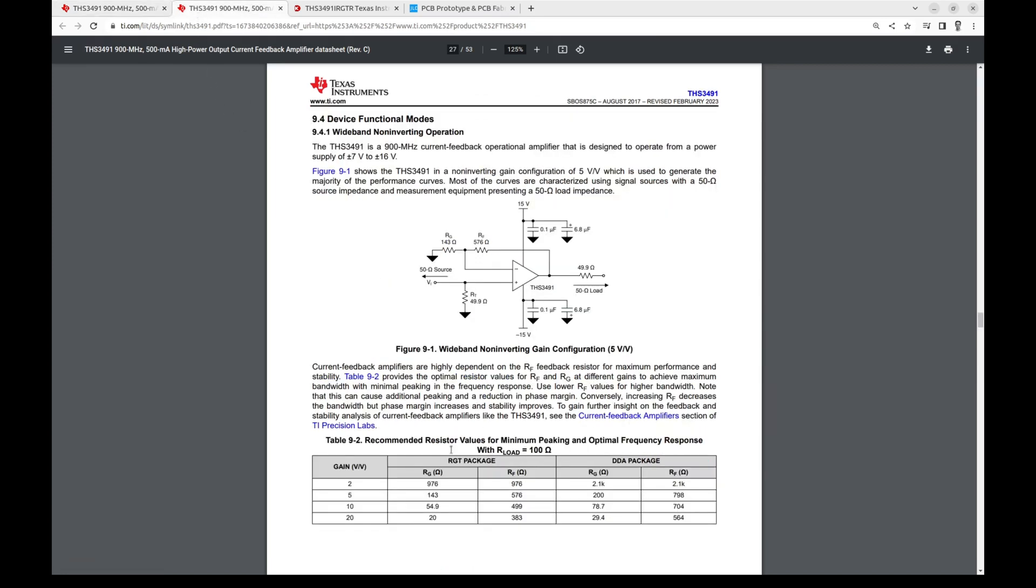And also, I showed in my previous video this table with recommended resistors for different gains and different packages. Now I am using this pair for RGT package and gain 10. And I also showed this paragraph, which says in particular that increasing these resistors should lead to decreased bandwidth, but improved stability. So let's try increasing these resistors.